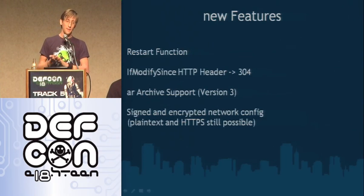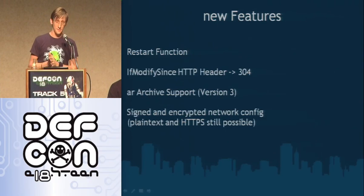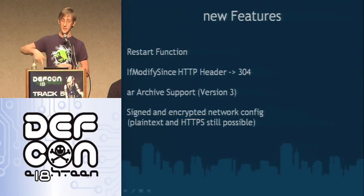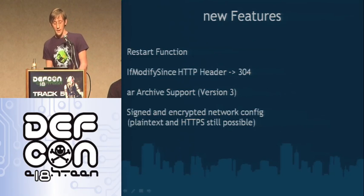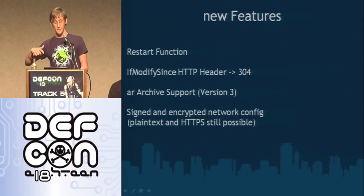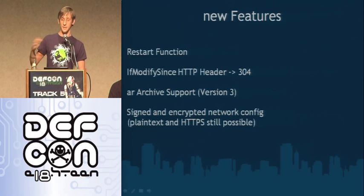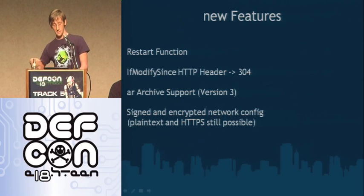After we did the rewrite from Perl to C, we added some new features to make it more comfortable. One of these features is a restart function that restarts things at a specific interval you can define in your config. This interval means it checks if there's a new config available — it requests the HTTP server for the config, and if it gets a 304 response, it knows it doesn't have to change anything, so it doesn't need to restart to get the new config.